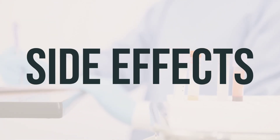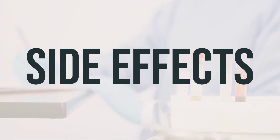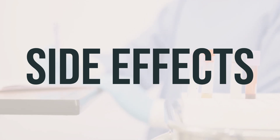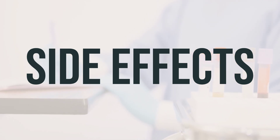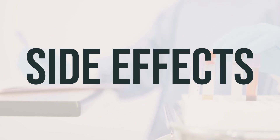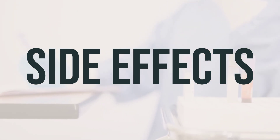Some common side effects of using tobramycin ointment may include blurred vision, tearing, eye redness, discomfort, or eyelid itching or swelling. If any of these effects persist or worsen, it's important to notify your doctor or pharmacist right away.